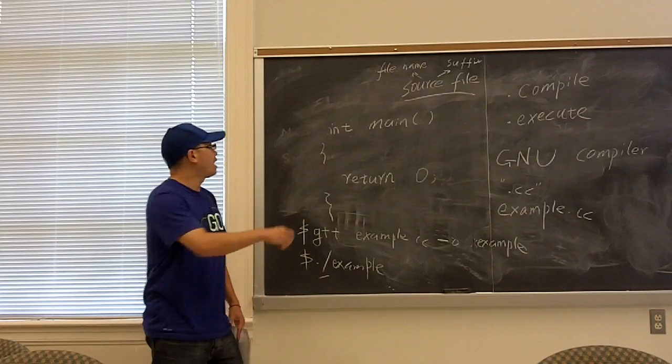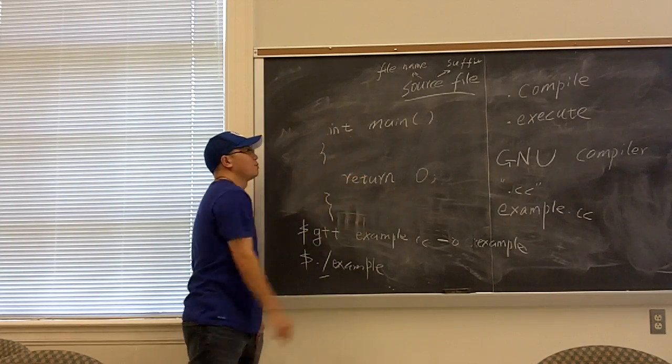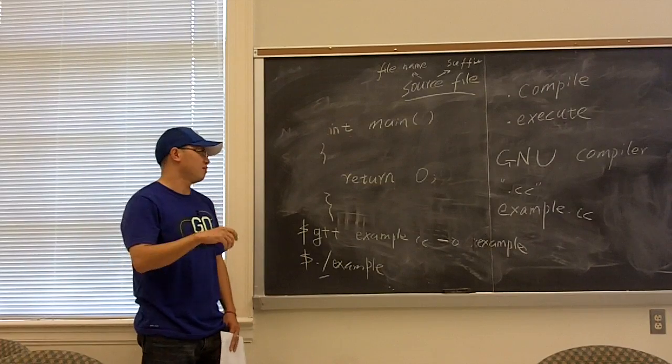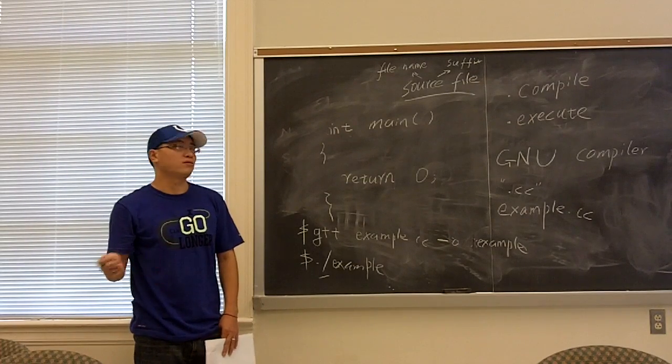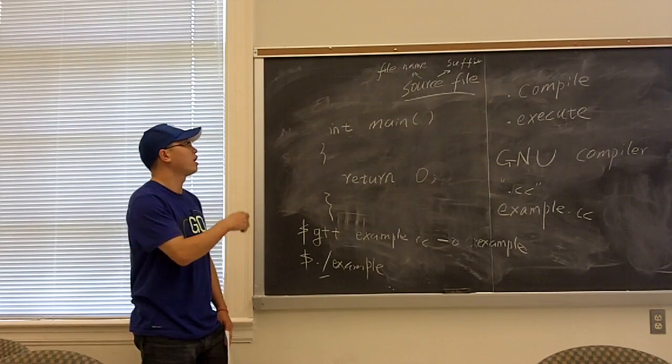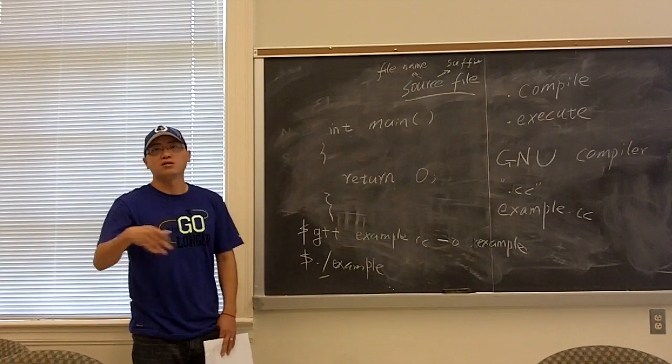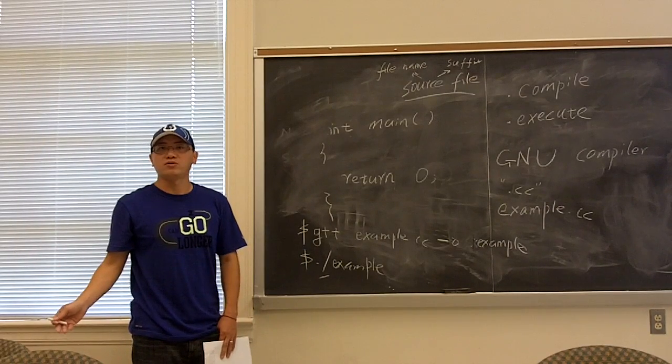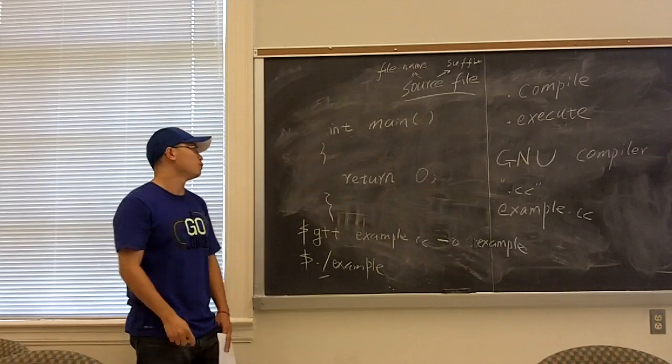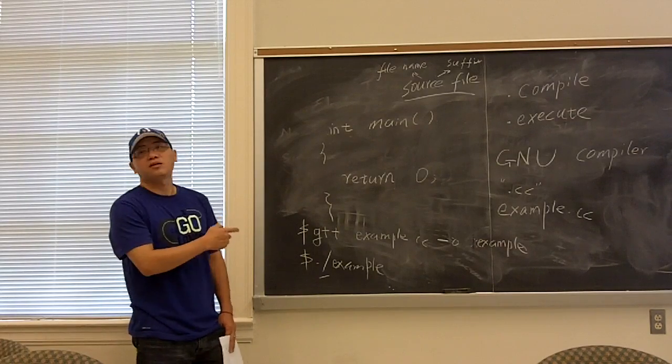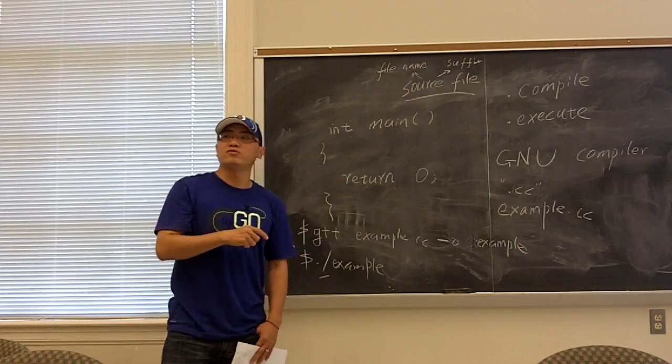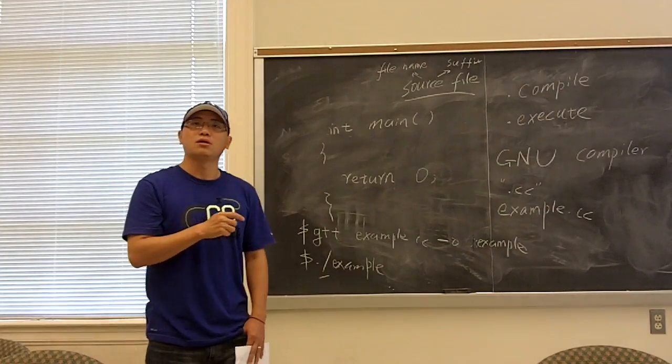So as we run this program, it just looks like nothing happens because we have only one function, main function, and this function only returns a value of zero. So can anyone remember that a return value of zero means what? The main function?